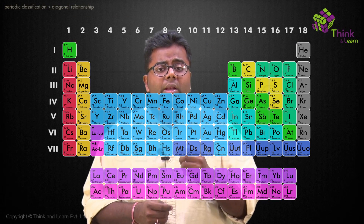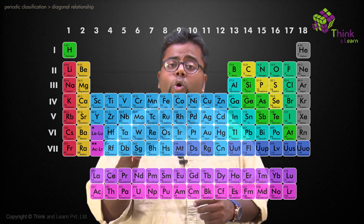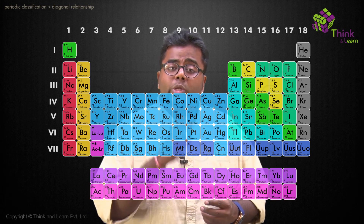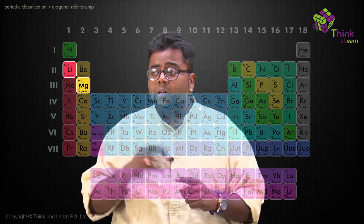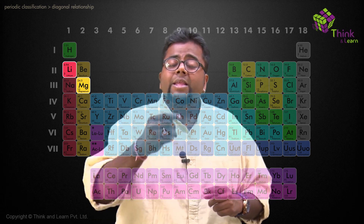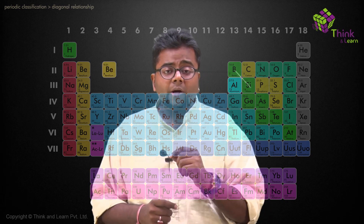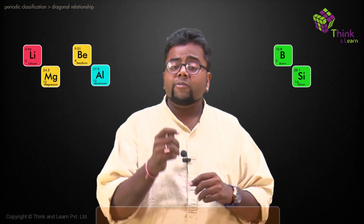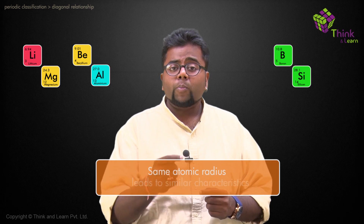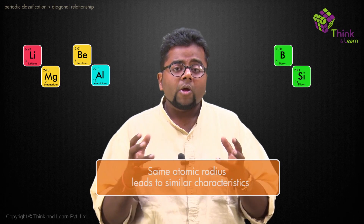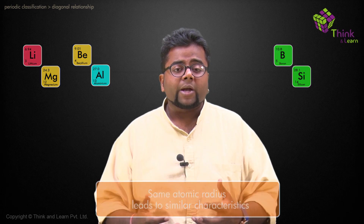There is a peculiar relationship where three pairs of elements have almost the same periodic properties. Since they are placed diagonally to each other in the periodic table, this is called the diagonal relationship. The three pairs are: lithium and magnesium, beryllium and aluminium, and boron and silicon. These pairs have similar atomic radii, causing similar values for all the properties discussed, which leads to anomalous behavior compared to other elements in their respective groups.